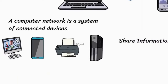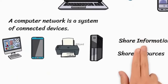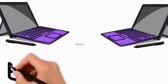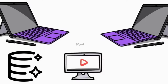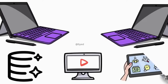Devices communicate with one another for the purpose of sharing information and sharing resources. When you send a message, you use a network. When you store files online, you use a network. When you stream a video or attend a virtual meeting, you rely on a network. Nearly every digital activity depends on a network.